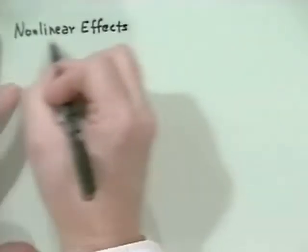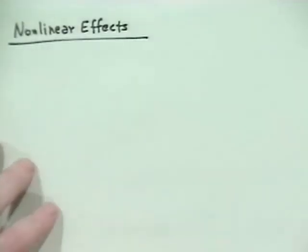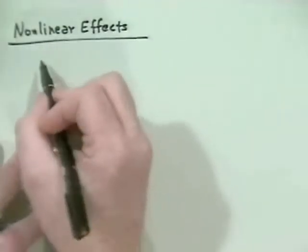Last time we spent some time talking about basic expansions in the smallness of electric field perturbations. We went through second order, then third order (three-wave couplings), and then fourth order (four-wave couplings). Today I want to talk about some other ways of doing things. We're still on nonlinear effects.